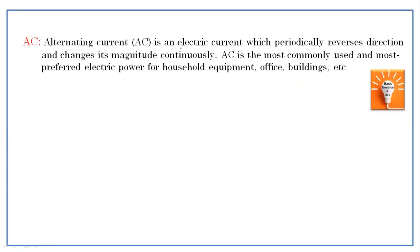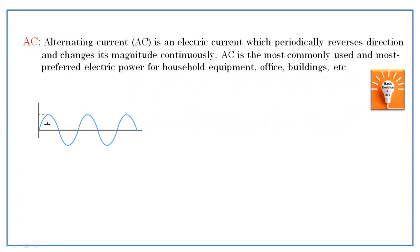Now let's start with what is AC current first. Alternating current is an electric current which periodically reverses its direction and changes its magnitude continuously. AC is the most commonly used and most preferred electric power for household equipment, offices, and buildings. If you see the waveform of the AC, it has a positive half cycle and a negative half cycle, alternatingly. That's why it is called alternating current.